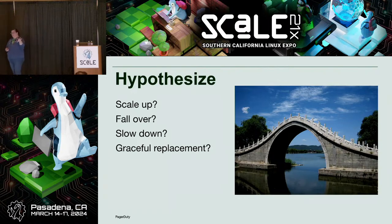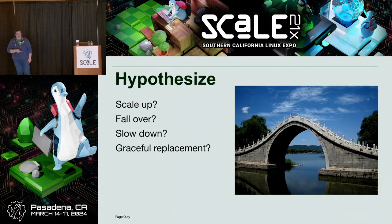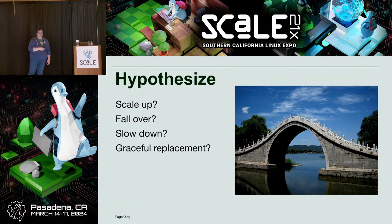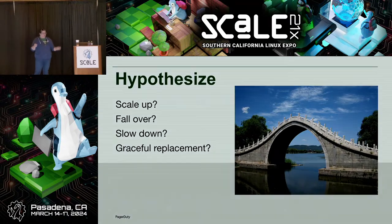We're going to hypothesize — we're going to say: we think when we turn this dial, it's going to scale up automatically, or maybe it'll fail over automatically from San Jose into Oregon. Maybe things are just going to slow down a little bit and that's within our SLOs and people are going to be okay. Or maybe there will be some kind of graceful replacement. Depending on how much automation you have in place, there might be things that happen automatically as you're testing, and you can test all of that automation as well.